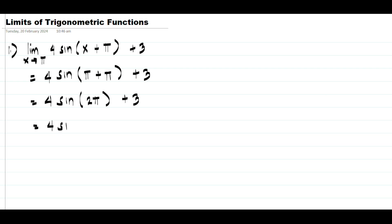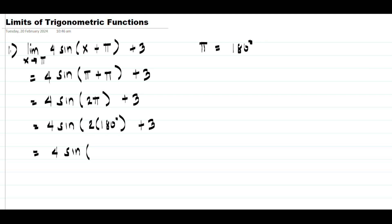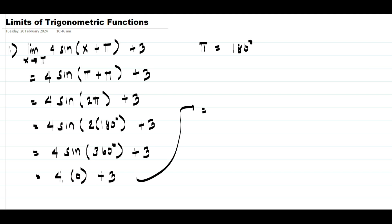Since π equals 180 degrees, we have 4 sine of 2 times 180 degrees plus 3, which is 4 sine of 360 degrees plus 3. The value of sine 360 degrees is 0, so we get 4 times 0 plus 3, and 0 plus 3 gives us 3. So 3 is our answer.